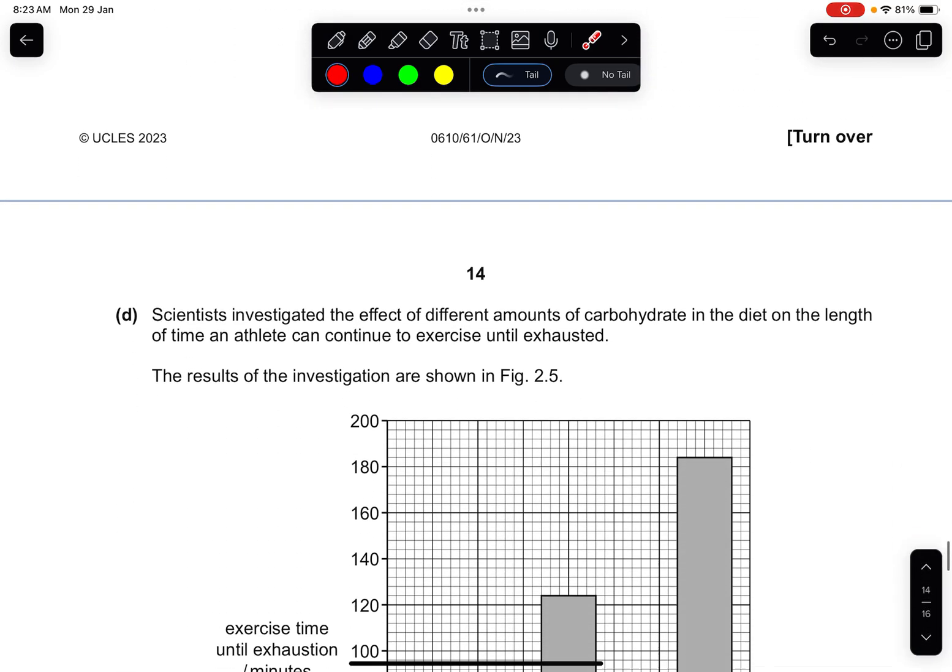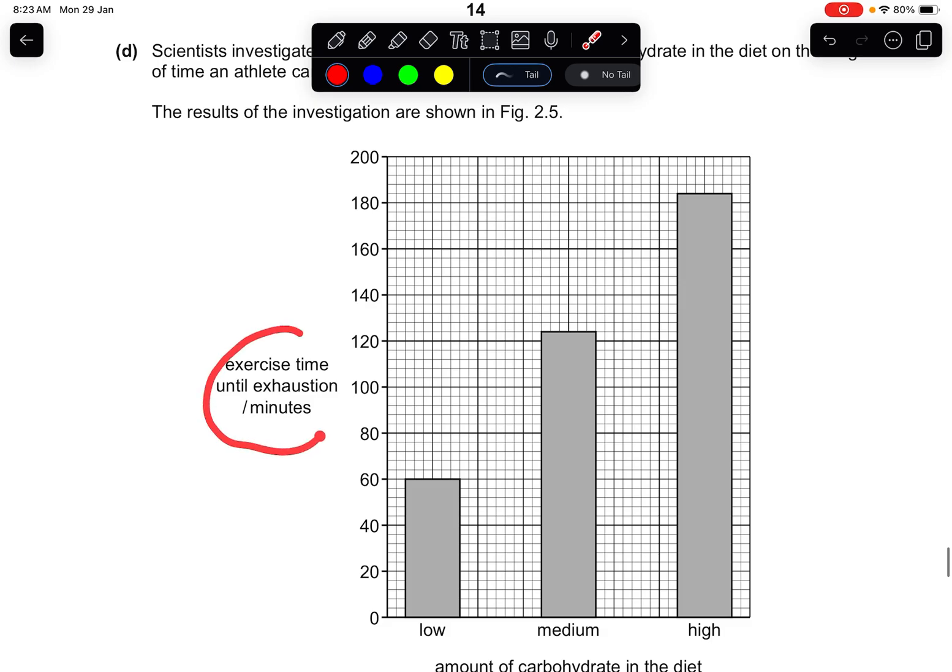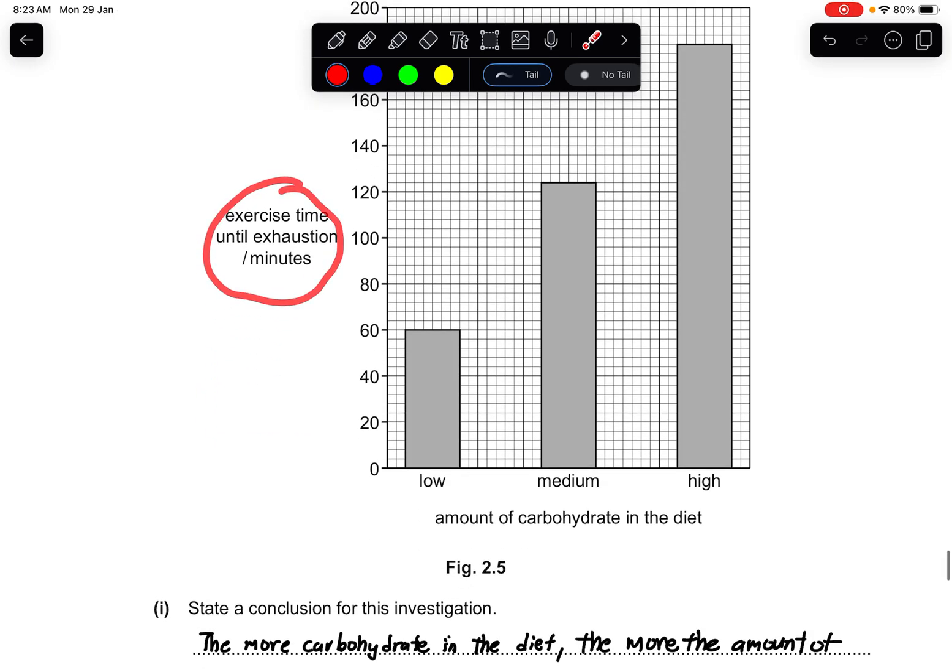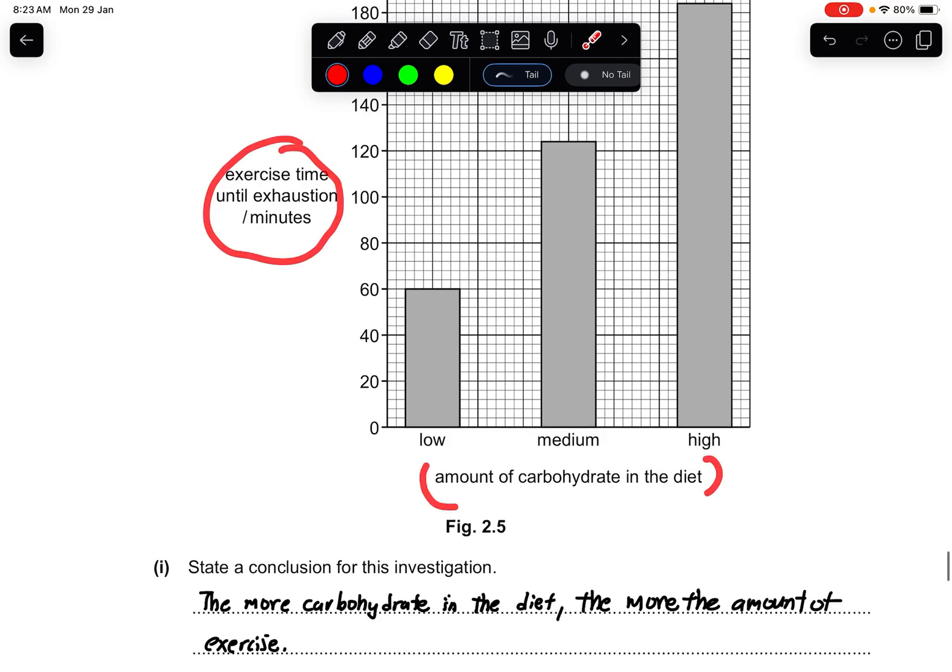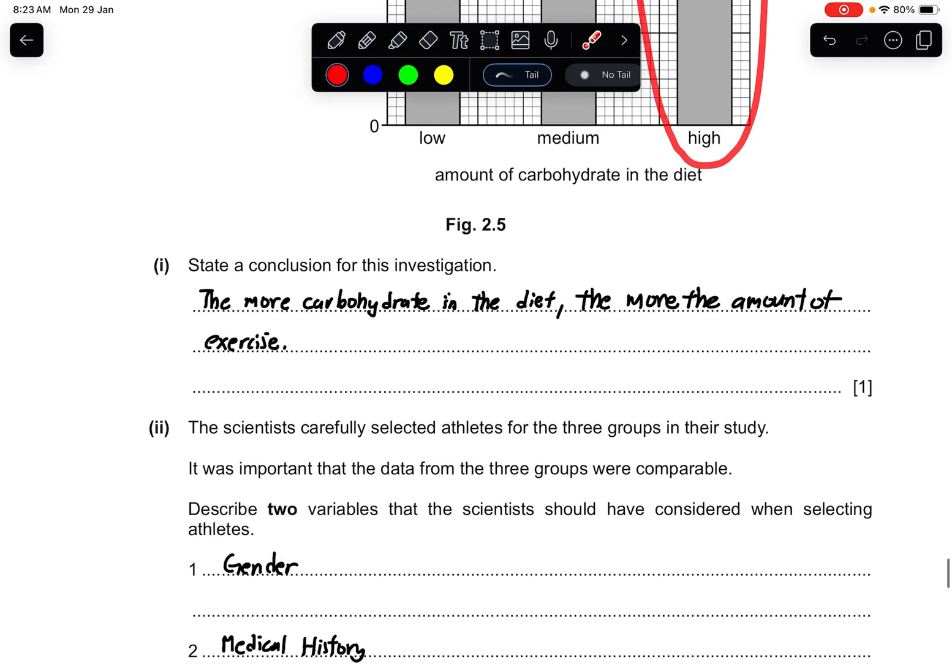Part D: Scientists investigated the effect of different amounts of carbohydrate in the diet on the length of time an athlete can continue to exercise until exhausted. The results of this investigation are shown. The exercise time until exhaustion is the dependent variable and the amount of carbohydrate in the diet. They want you to state the conclusion. The conclusion from here is the more carbohydrate is in the diet, the more amount of exercise can be done.